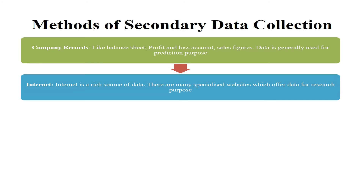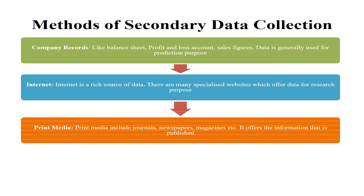The second is the internet. The internet is a rich source of data, and there are many specialized websites which offer data for research purposes. The next is print media. Print media includes journals, newspapers, magazines, etc., and offers information that is published.